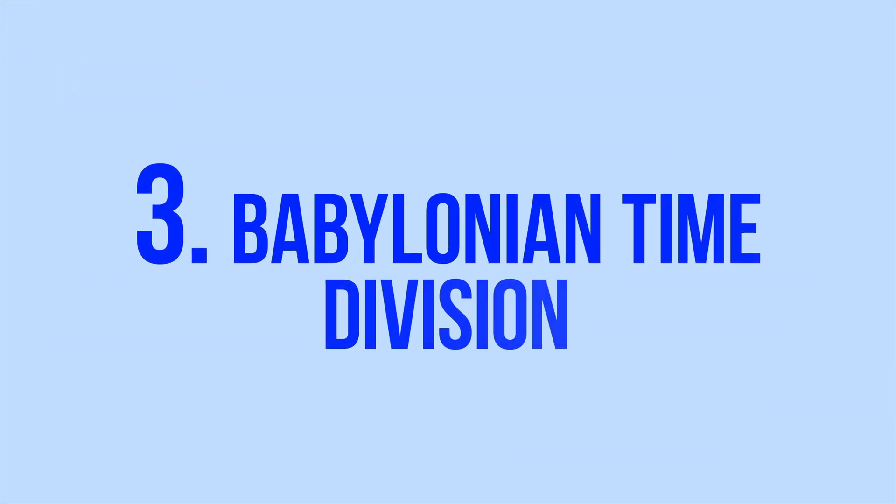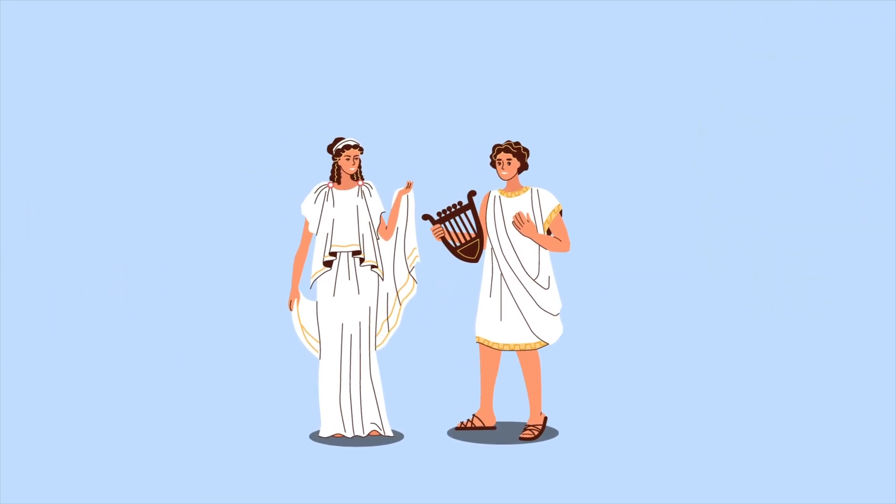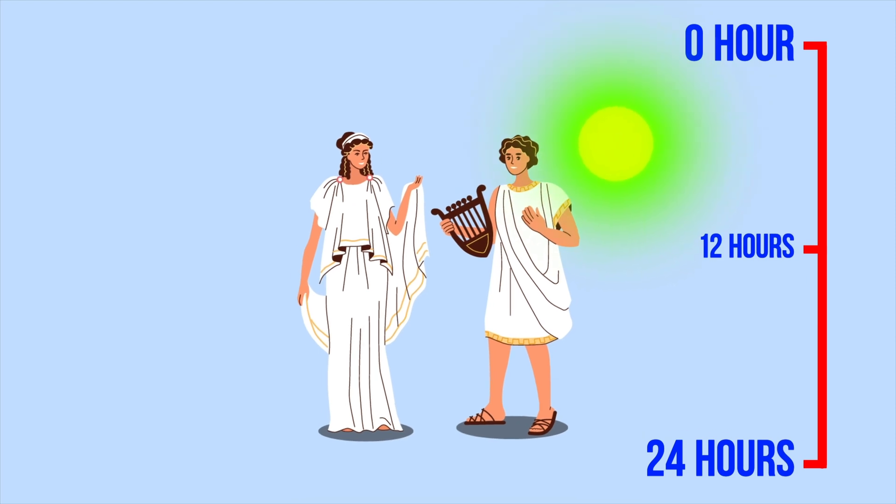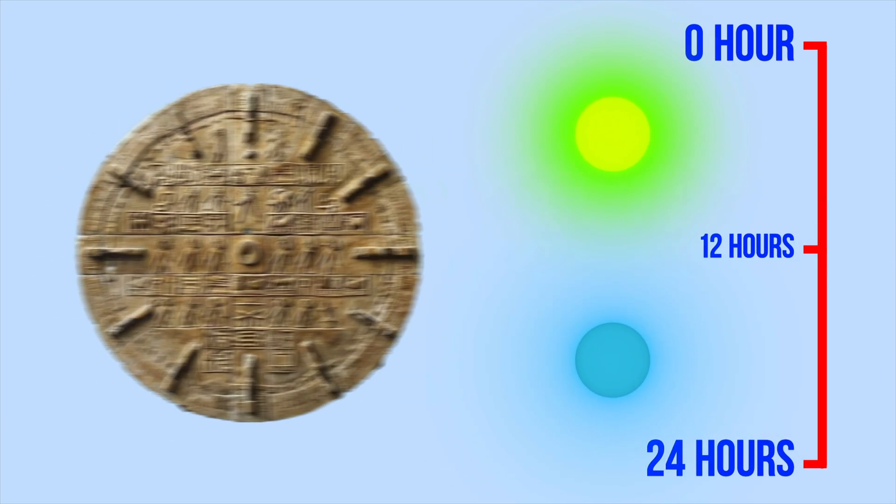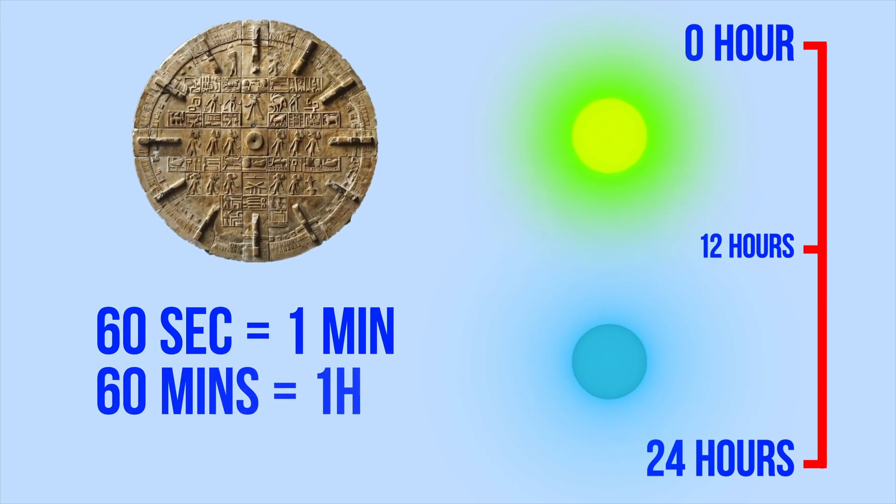Babylonian Time Division. As ancient societies progressed, people began to recognize the importance of dividing the day into smaller segments to facilitate daily life. In Babylon and ancient Greece, the concept emerged of splitting the day into 12 daytime hours and 12 nighttime hours. The Babylonians employed the sexagesimal system, based on the number 60, for measuring time.